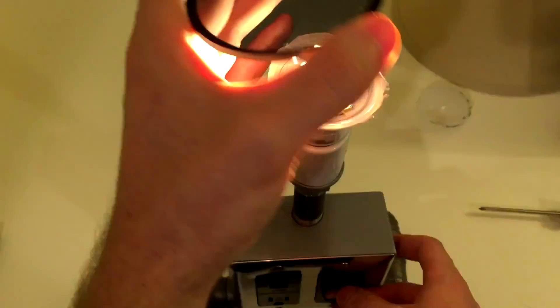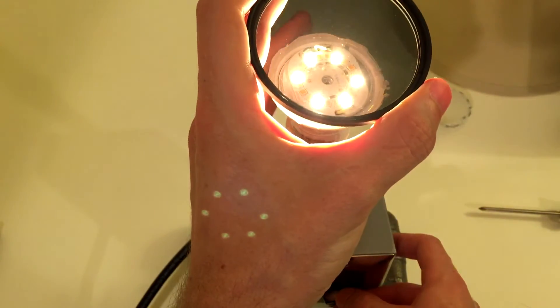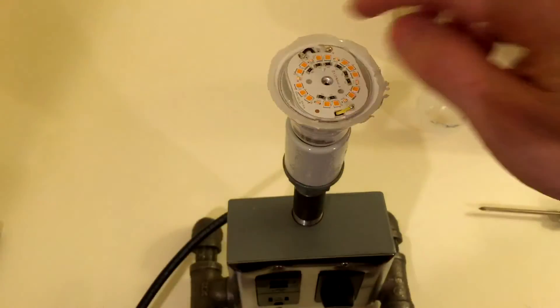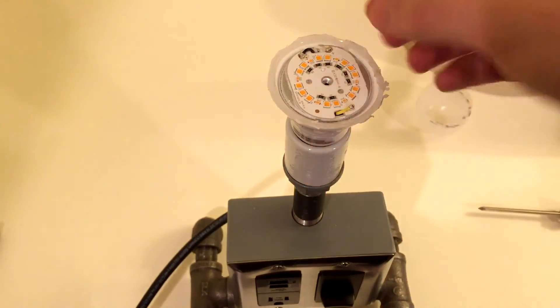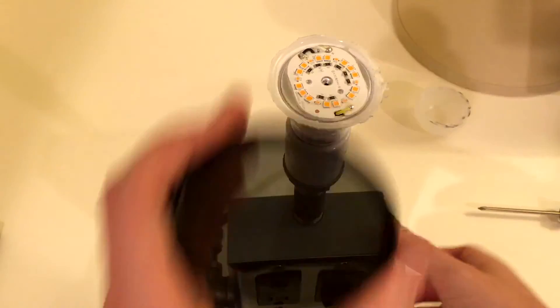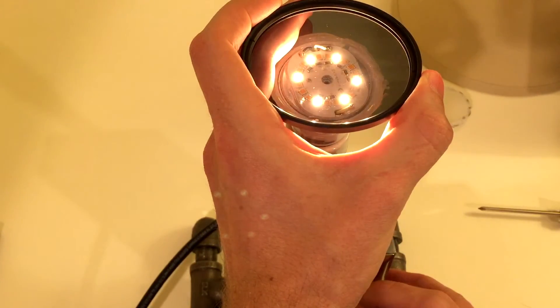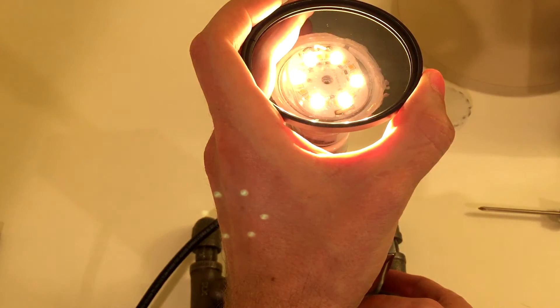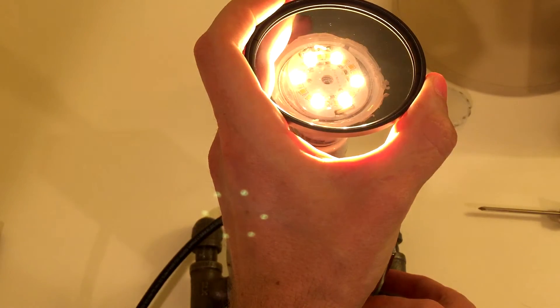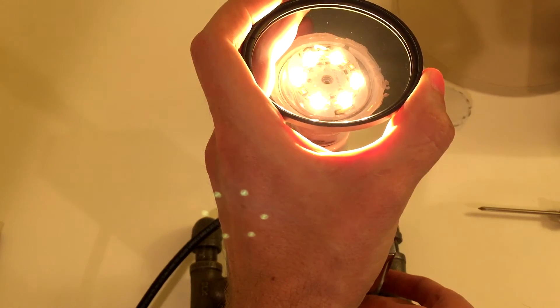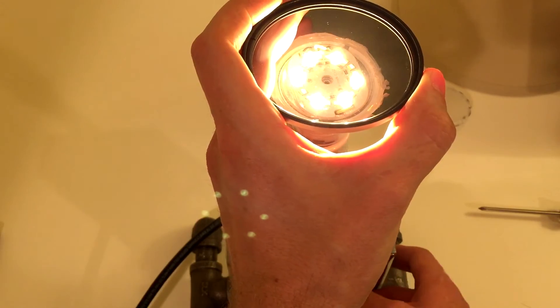But all the LEDs start to kick on. So, these sets of two LEDs here, the larger two LEDs all the way around, they come on together when the dimmer comes up. You can see that start to kick on right about there. Right there, they start to kick on.